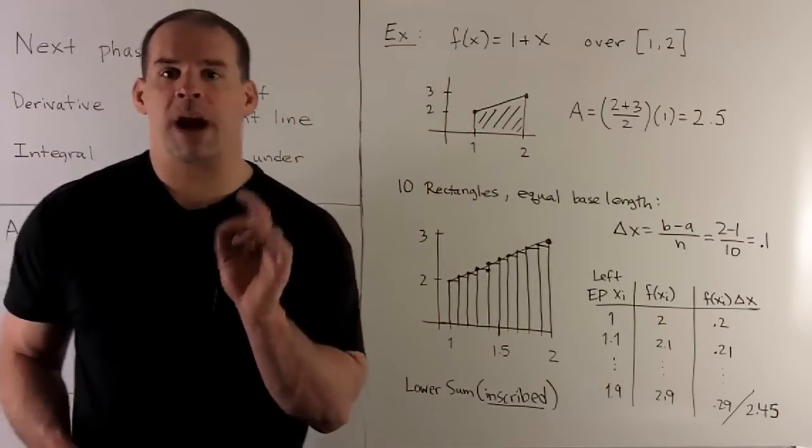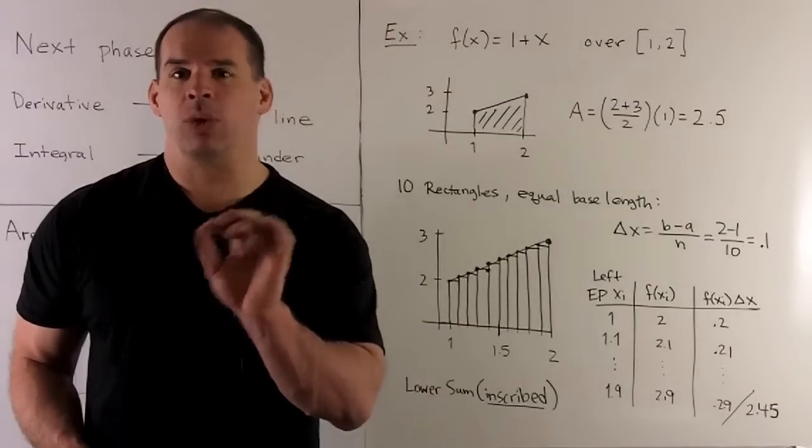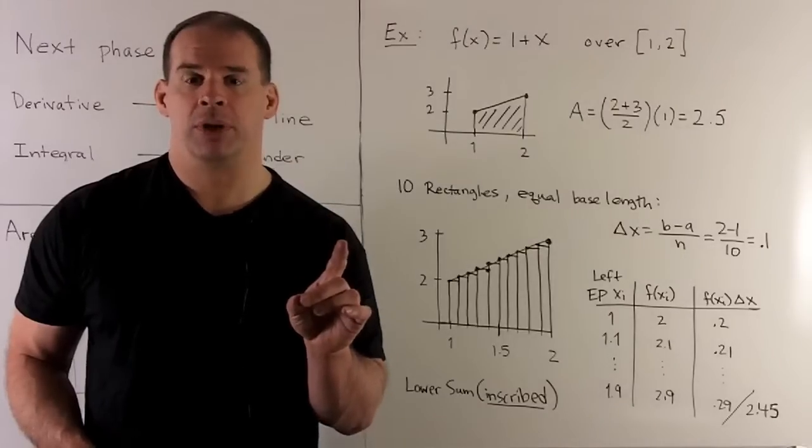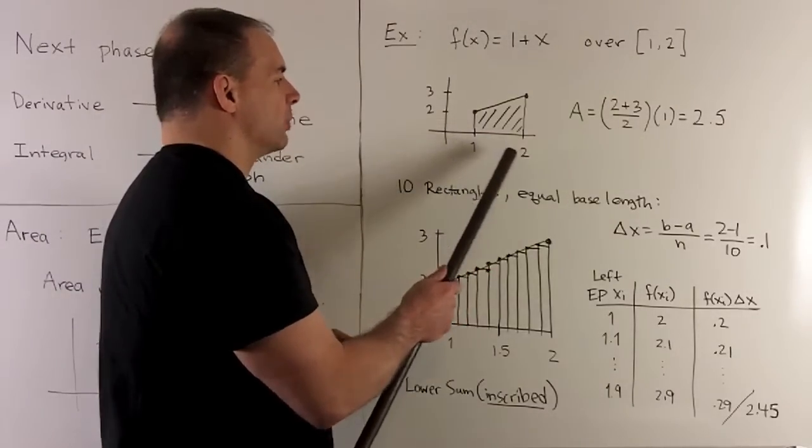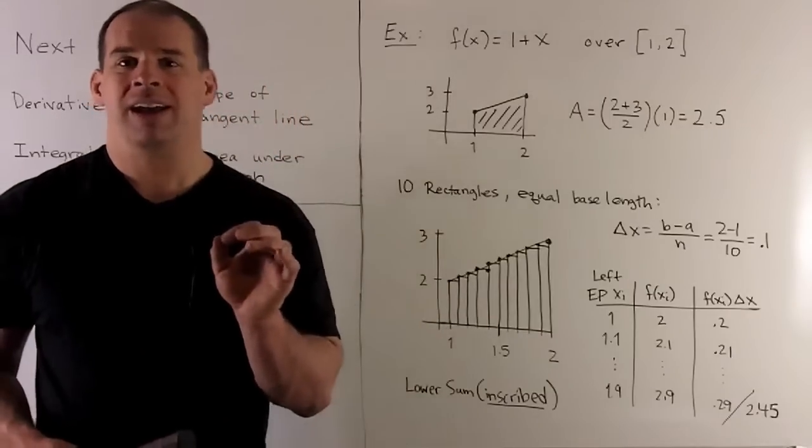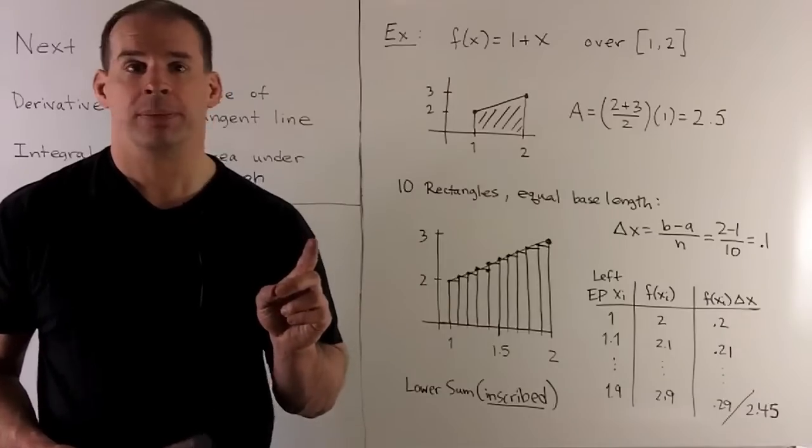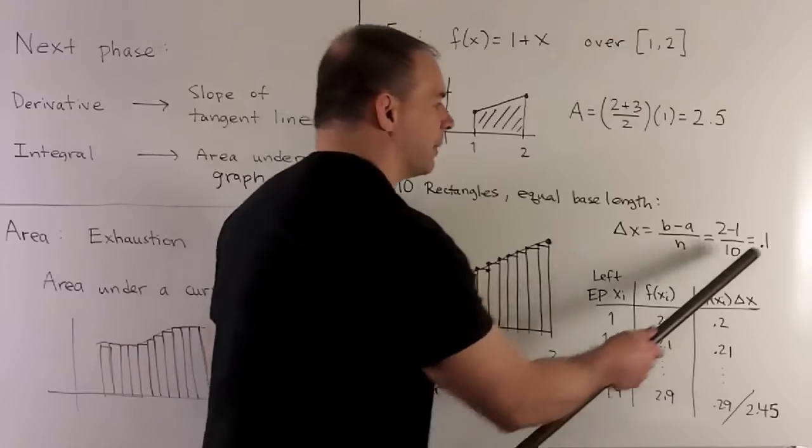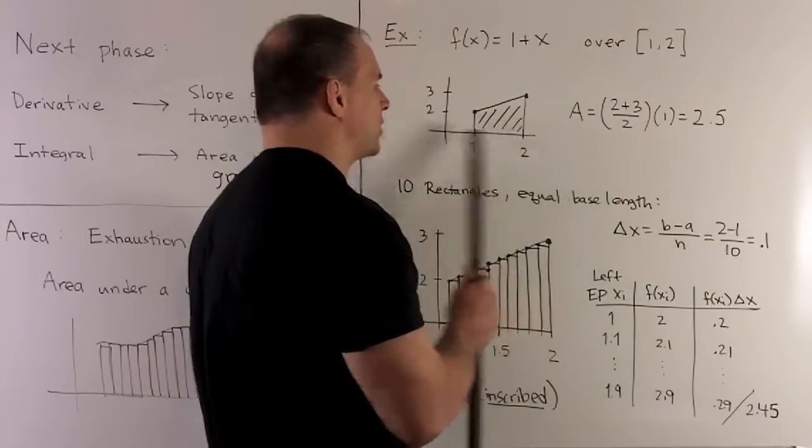Now, let's do an approximation with 10 rectangles, each having equal length base. Note, the total length of our base is going to be 2 minus 1, so it's equal to 1. Then we divide by 10, so we could fit 10 rectangles in there. So, our base length is going to be 0.1. We'll call that delta x, since we're going along the x-axis.